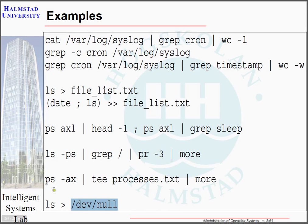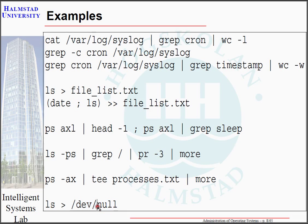A useful thing to know when doing complex operations is /dev/null. This is part of the dev hierarchy — a pseudo filesystem where entries are not actual files but devices. Null is a specialized device that doesn't do anything: you can send whatever data you want there and it will just disappear. So if you want to execute a command that produces output you're not interested in and don't want cluttering the screen, you can just redirect it to /dev/null.